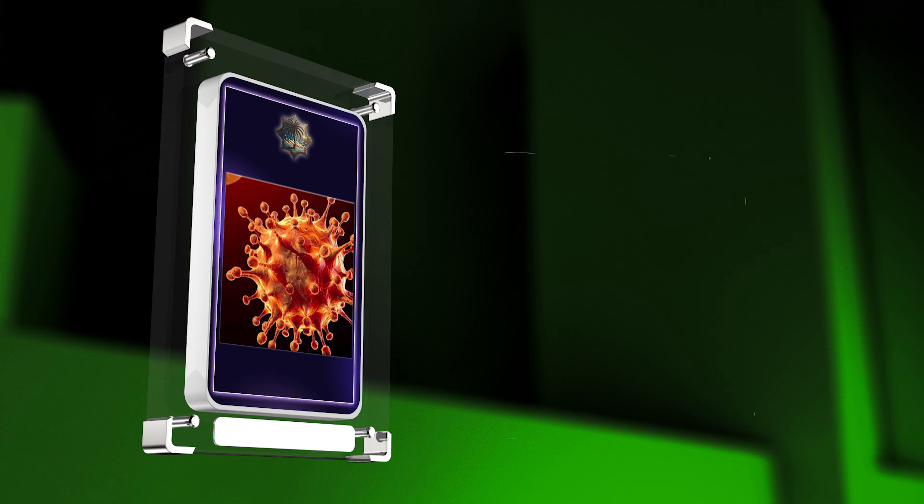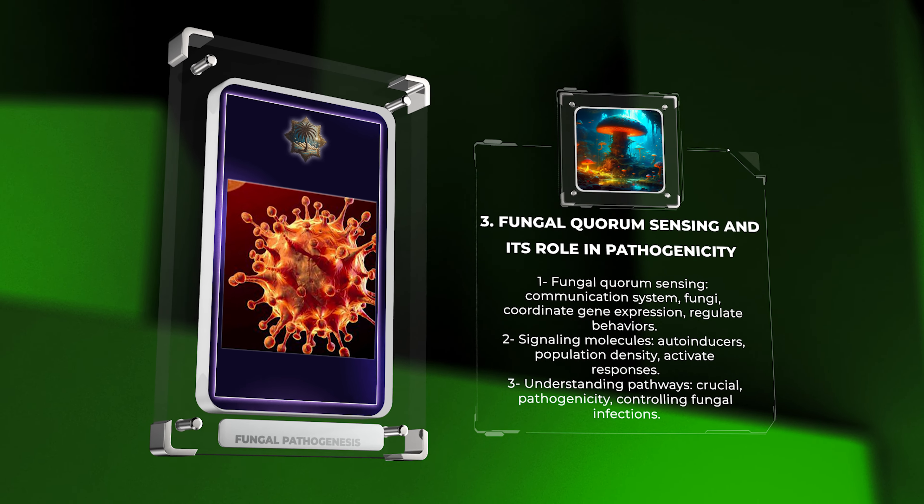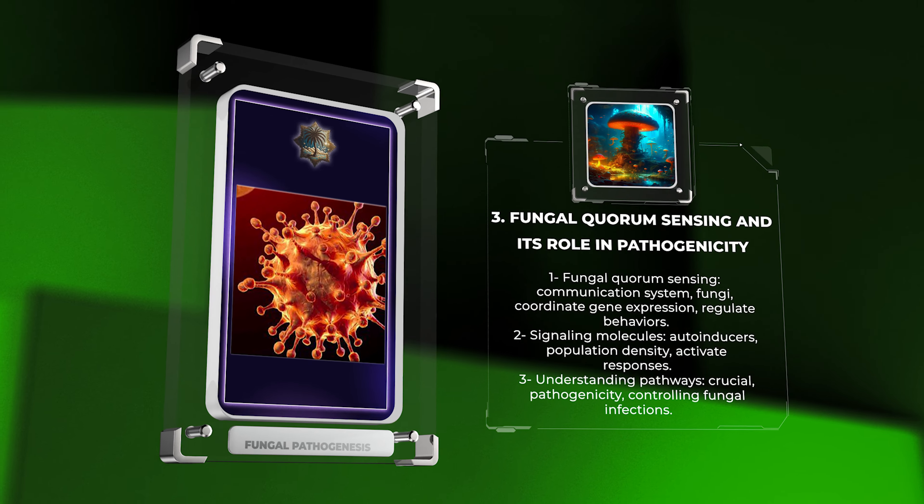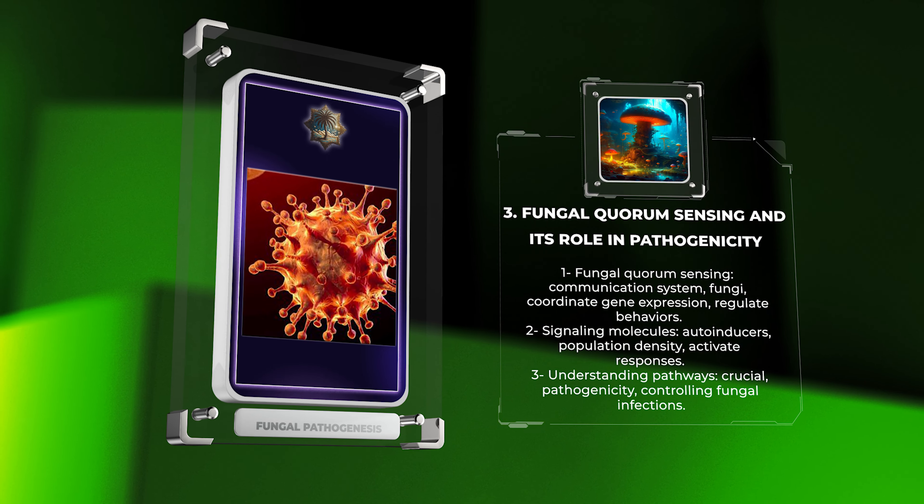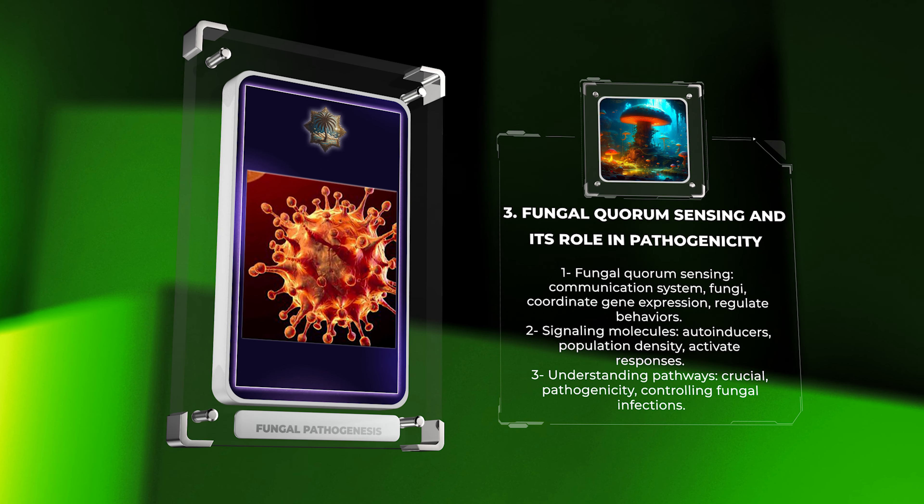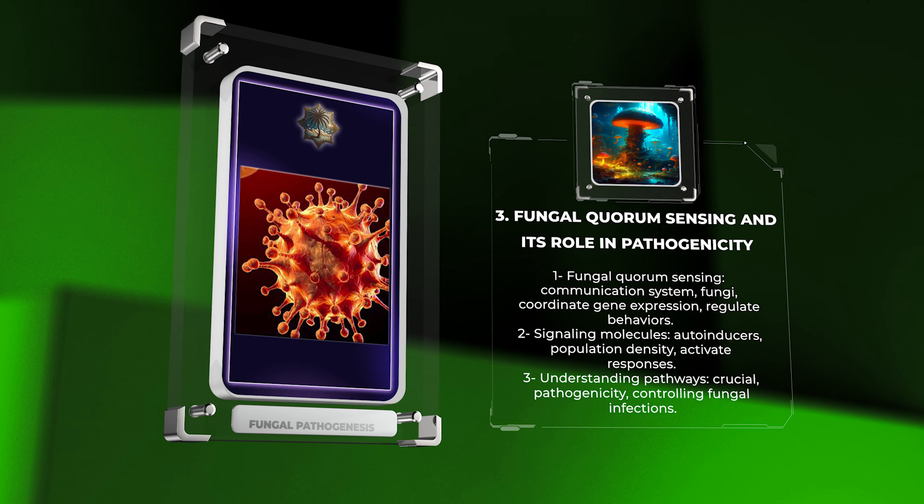Fungal quorum sensing is a communication system used by fungi to coordinate gene expression and regulate behaviors. It involves the production and sensing of signaling molecules called autoinducers to sense population density and activate appropriate responses. Understanding these pathways is crucial for understanding pathogenicity and controlling fungal infections.